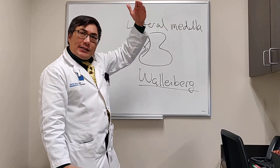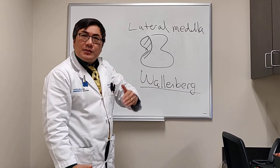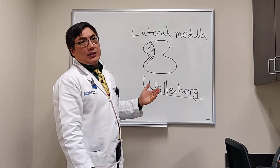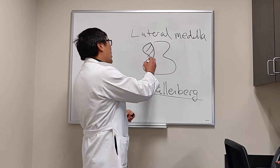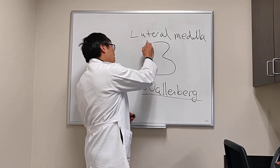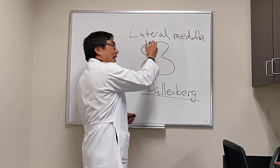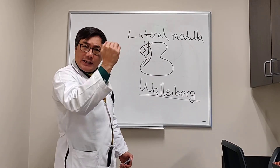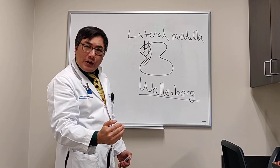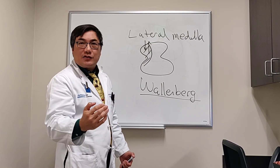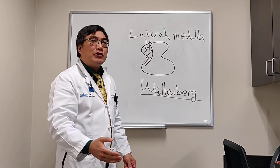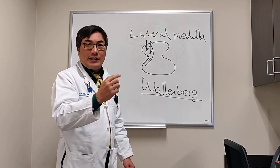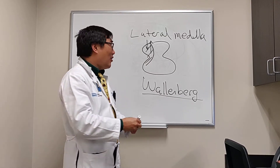Everything from the cortex has to go to the spine and everything from the spine has to go back up to the cortex. In a lateral medullary syndrome, we are involving structures that are both descending and ascending. One pathway is from the hypothalamus descending down the posterior lateral portion of the brain stem to control the sympathetics for the eye. That oculosympathetic pathway produces a little bit of ptosis, upside-down ptosis, and an anisocoria that's greater in the dark — called a Horner syndrome.